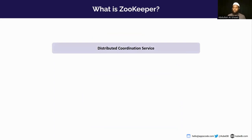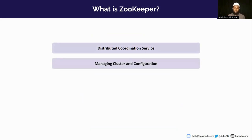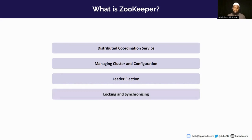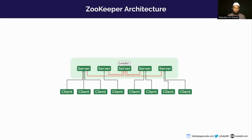So what is ZooKeeper? ZooKeeper is an open source distributed coordination service. It was first built at Yahoo and is now managed by Apache. It can help you coordinate between distributed systems, manage cluster configuration, perform leader election among replicas, acquire distributed locks, and synchronize data across your instances.